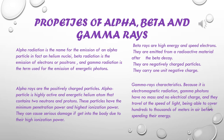Beta rays are high energy and high speed electrons emitted from a radioactive material after beta decay. They are negatively charged particles carrying one unit negative charge. The formula of a beta ray is ₀e⁻¹, and the formula of an alpha ray is ⁴He₂.